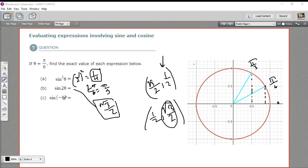Last one is the sine of negative theta. So we actually want to go the opposite direction from 0. So we want to go pi over 6 down in this direction. So we'll plot that.